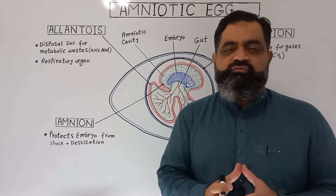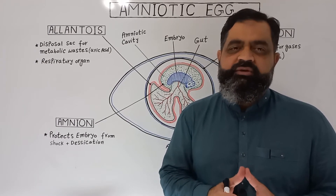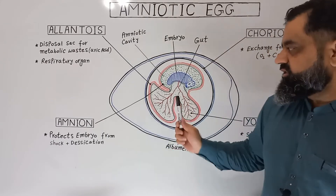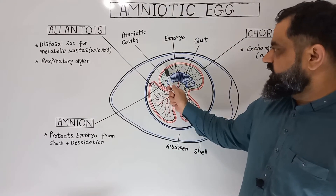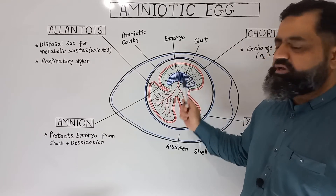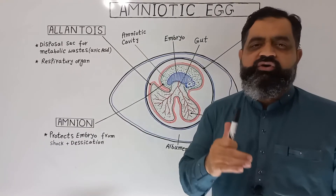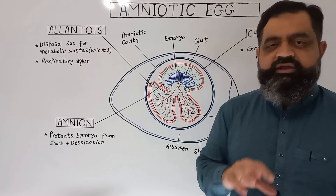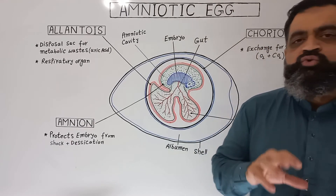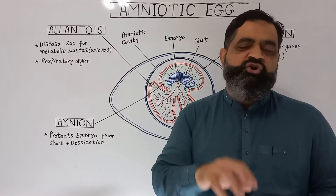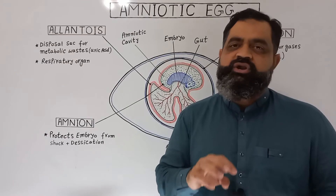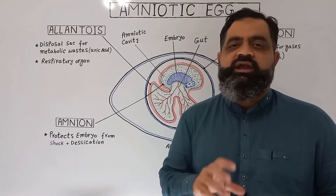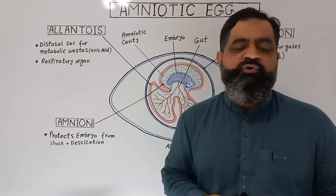Looking at the diagram, the Amnion is a cup-shaped structure which contains amniotic fluid, and from this term 'amniotic egg' has been derived. All those animals which possess an amniotic egg are known as amniotes, which includes reptiles, birds, and one group of mammals.